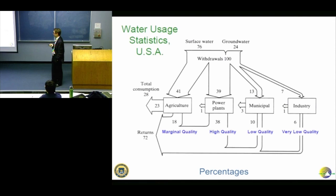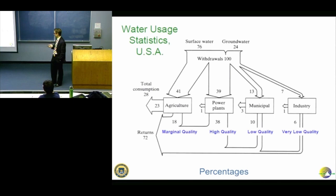In terms of quality: agriculture water comes out relatively poor — it's interacted with the soil, might get salty. Power plant water is fairly higher quality. Municipal wastewater needs to be treated — we'll talk more about that. Industry water you probably don't want to interact with if it's been used in a plating process or as cutting fluid. Actually, industry may be the biggest polluter of water, but it's not the biggest user in terms of these categories.